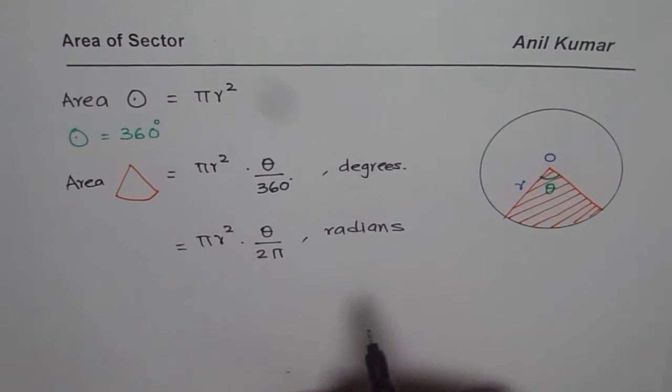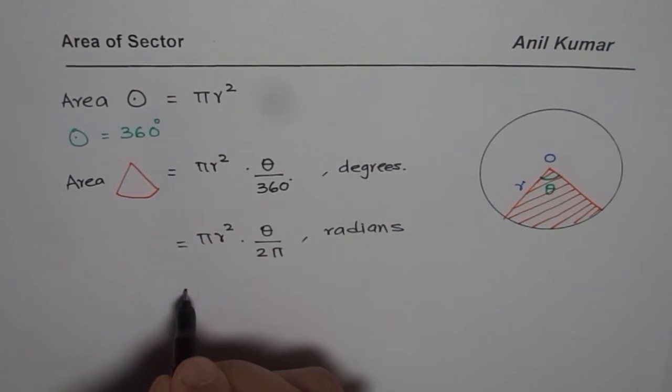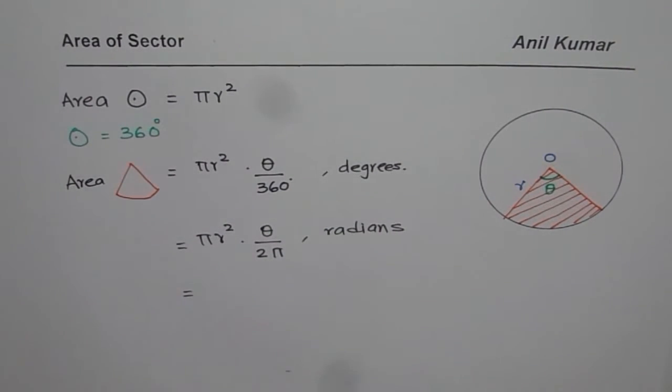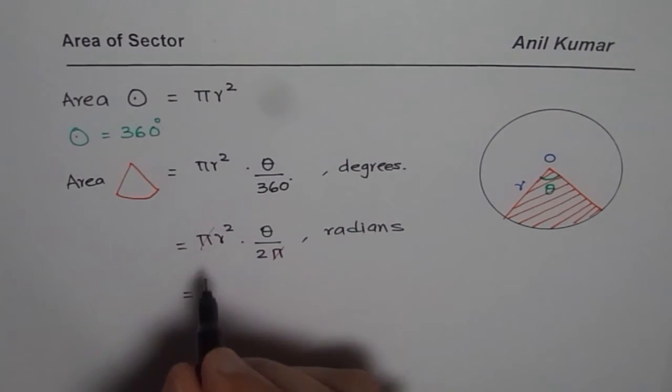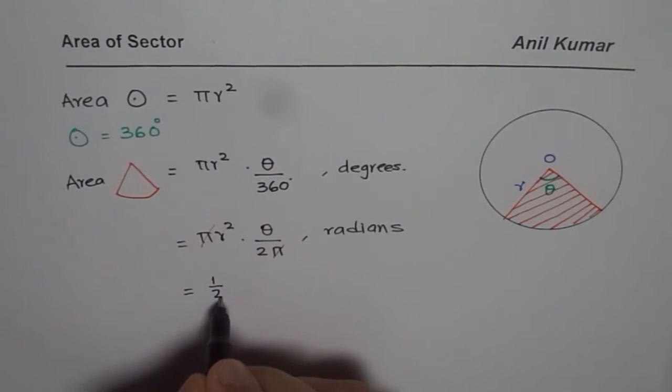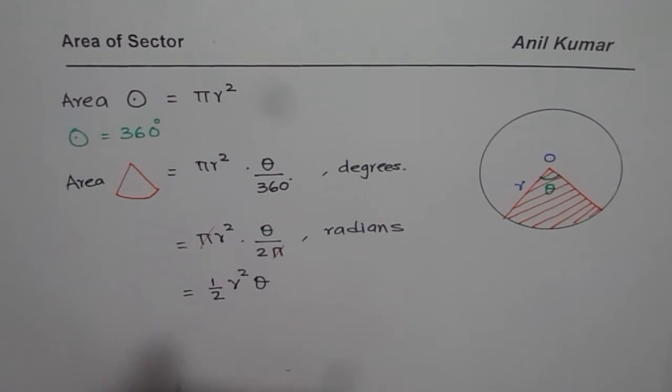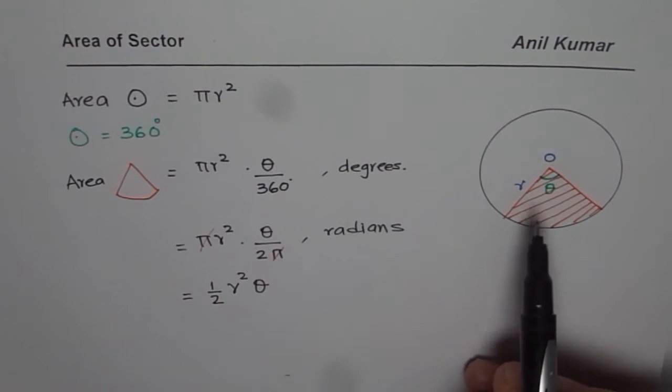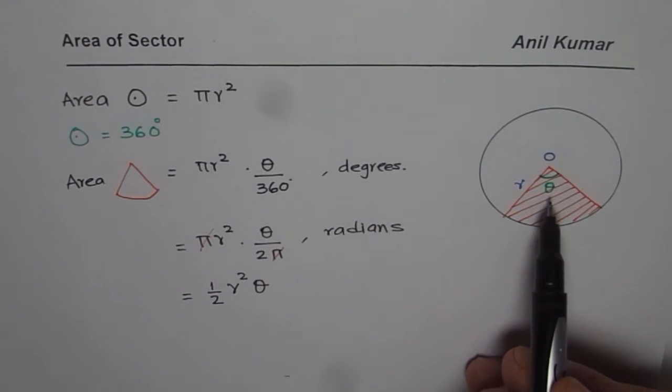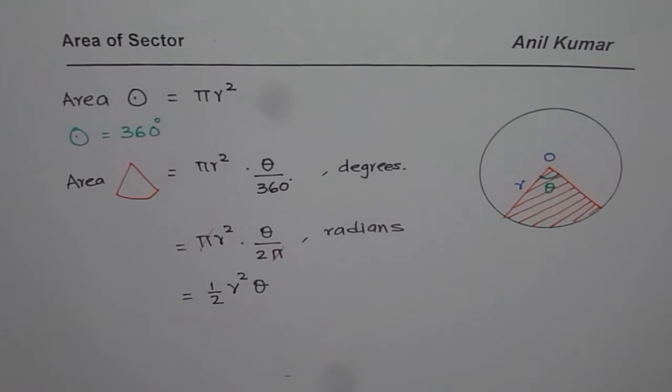Now that can be simplified further. We can write this formula as π and π cancel. So let's cancel this and simplify. We get ½R²θ. That becomes the formula for area of sector if you are given the angle dimensions in radians.